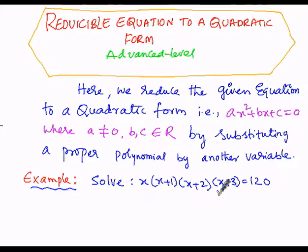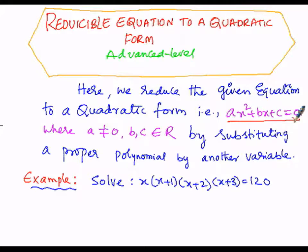This is the given equation, which is not in the form of a quadratic, that is ax² + bx + c = 0. We have to bring it into the form ax² + bx + c = 0, or in other words, the quadratic form. The solution starts now.